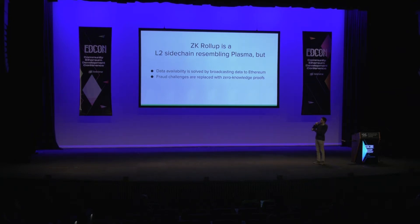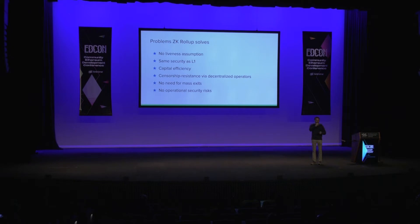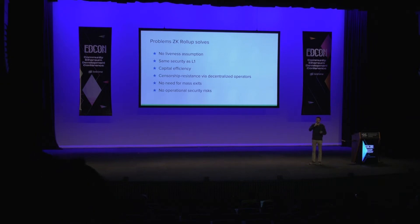Let's deep dive into the architecture a bit further, but let's see what it gives us — why it's cool. First of all, we don't have any liveness assumption in our case, because the state transitions are secured by zero-knowledge proofs. Users do not have to monitor the chain and submit proofs that something is incorrect, which is very good from a user experience perspective. We also achieve the same security guarantees as layer one, so I can send my money into the sidechain, go offline, and be sure that no matter what — operator alive or not — I will always get the funds back if layer one is secure.